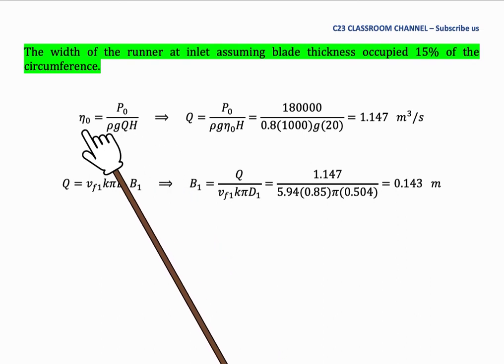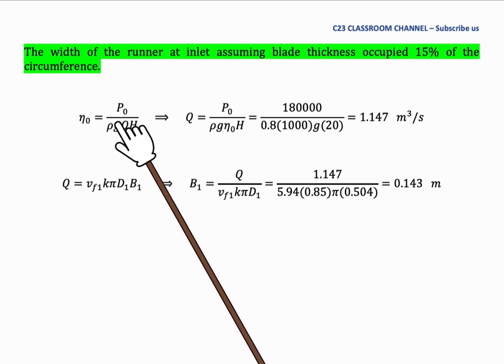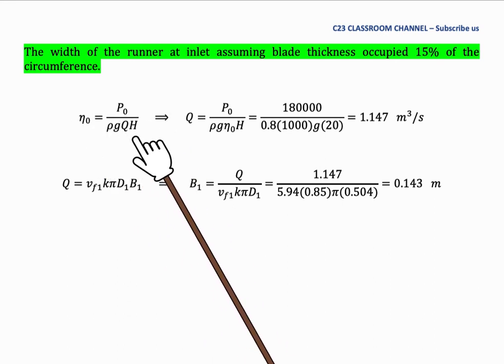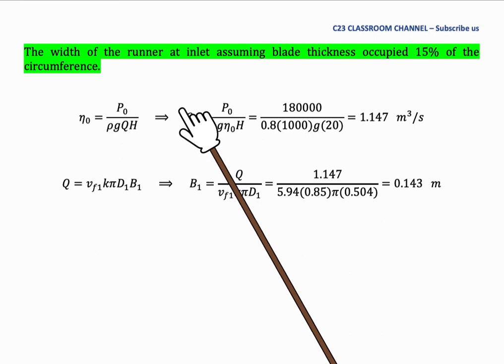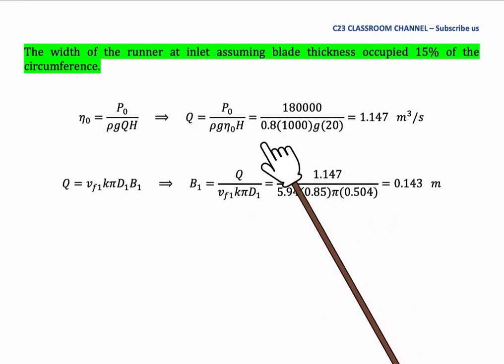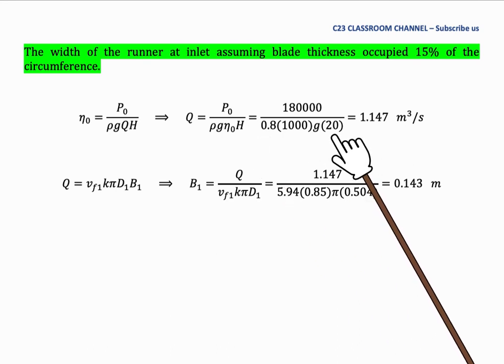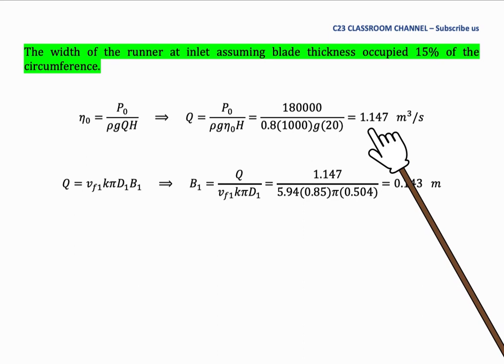First, from the equation of overall efficiency, P0 over rho gQH, we can calculate the flow rate. We substitute all the values with H equal to 20, and get the flow rate is equal to 1.147 meter cube per second.